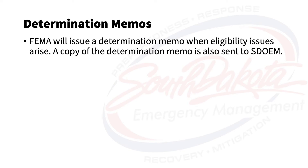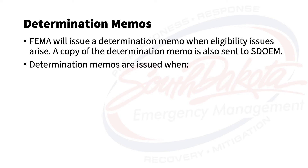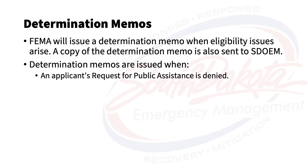FEMA will issue a Determination Memo when eligibility issues arise. A copy of the DM is sent to both the applicant and SDOEM staff via certified mail or read receipt email. A copy of the DM is also uploaded to the applicant's account in grants portal.